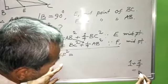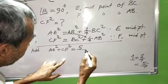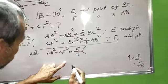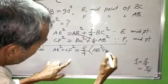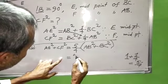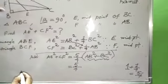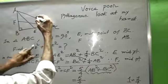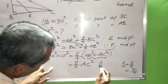This equals five by four AB square plus five by four BC square, which equals five by four times (AB square plus BC square) equal to AC square. This is the answer.